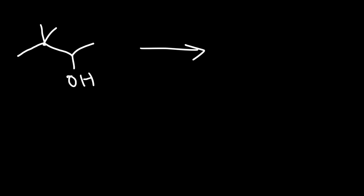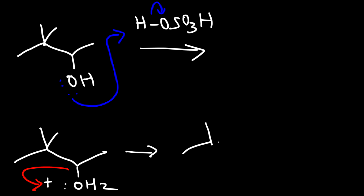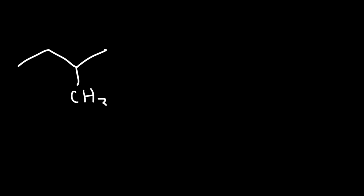Now let's try another example. Let's react this alcohol with sulfuric acid. Just like the last problem, the first step is protonation, and then the leaving group leaves — now that we have a good leaving group. We have a secondary carbocation, but it's adjacent to a quaternary carbon, so a methyl shift will occur. One of the methyl groups is going to move towards the carbocation, and as a result the whole carbon structure will change. The plus charge is now on the carbon that lost the methyl group, giving us a tertiary carbocation, which is more stable than a secondary carbocation.